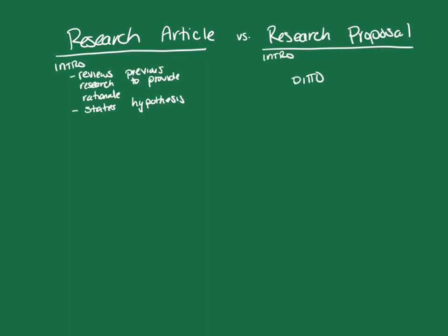Both research articles and research proposals have an introduction that has the same focus. Both use the introduction to review previous research, which is then used to provide a rationale for the current hypothesis. Both the research article and the research proposal end their introduction with a clear statement of the hypothesis.